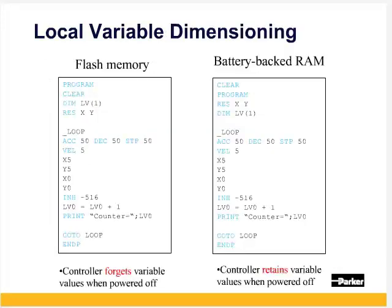Clear erases local variable dimensioning. For local variables in Flash-based products, local variable values are forgotten on PowerDown and are reset on PowerUp. For battery-backed RAM products, use clear before the program so that the local variables are free for redimensioning on download. Using DIM inside the program, as long as its value is not changed, will not reinitialize the local variables.